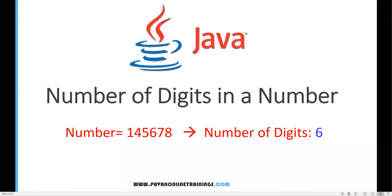Hi everyone, welcome. In this video I'm going to show you how we can count the number of digits in a number. For example, I have a number: 1, 4, 5, 6, 7, 8 — so the total number of digits in this number is six. That is the output I should get from my program.